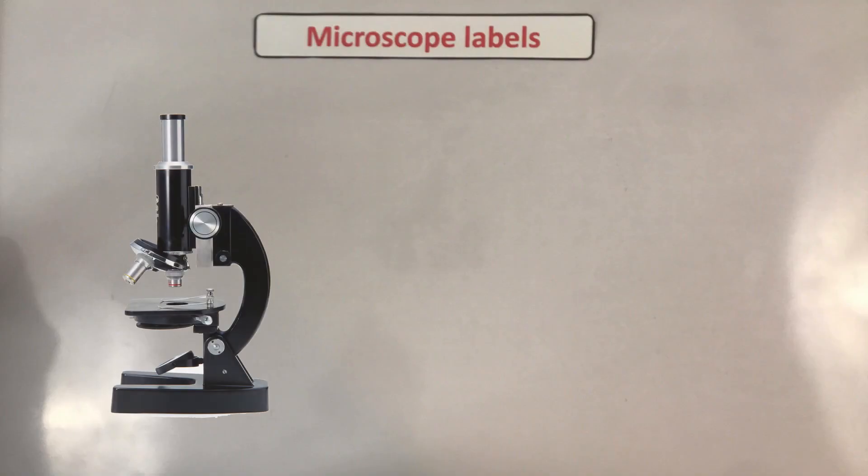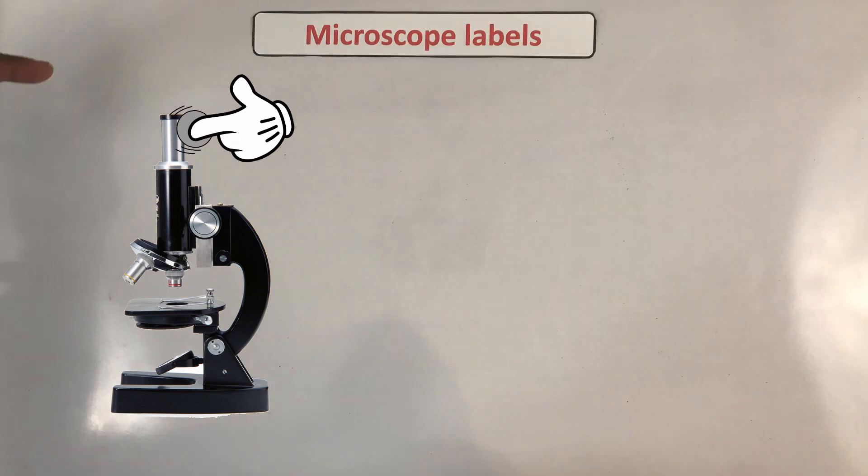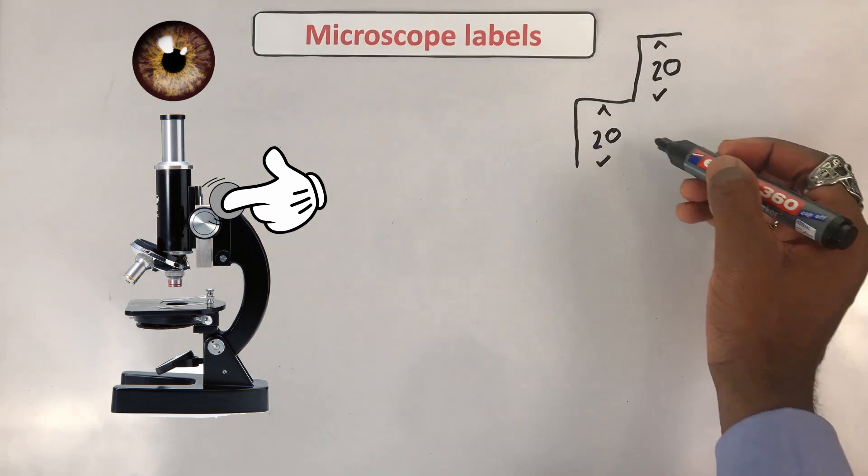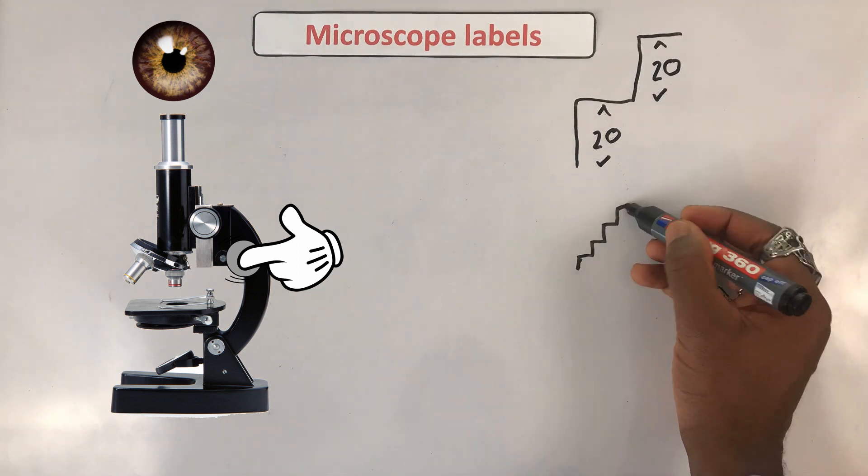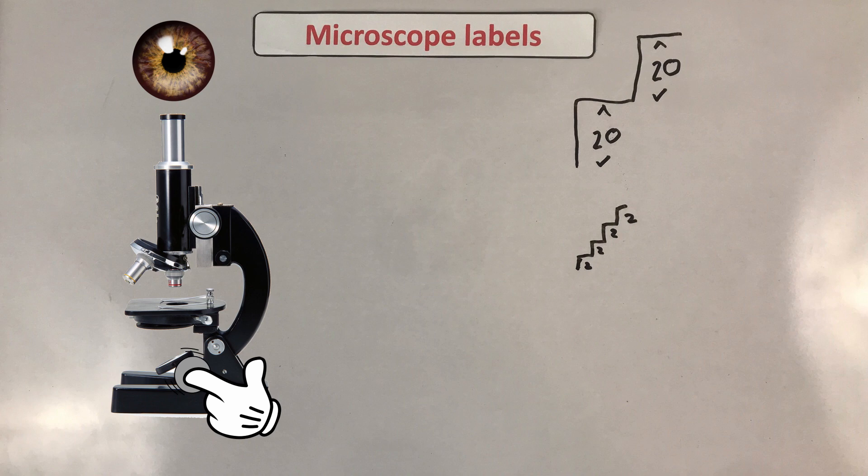Here's a typical light microscope. You need to be able to label this. Going clockwise, you've got the eyepiece. This is where you pre your sample. The lens in here is ×10. Then you have your coarse focusing wheel. This helps you focus in big steps. Then you have your fine focusing wheel. This helps you focus finely in smaller steps. Underneath you've got your light or your mirror. This allows light to pass through your object into your eye.